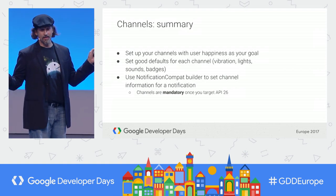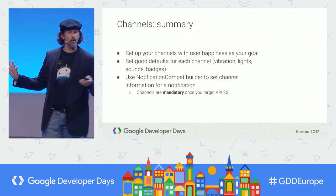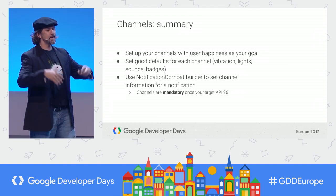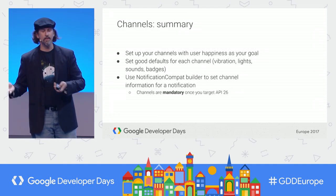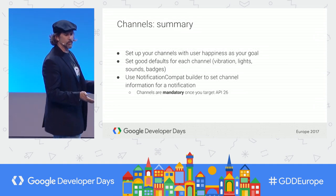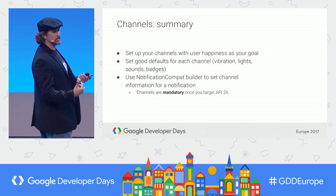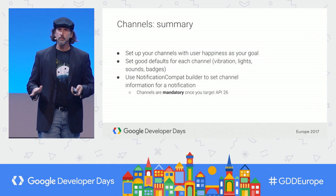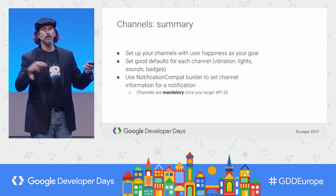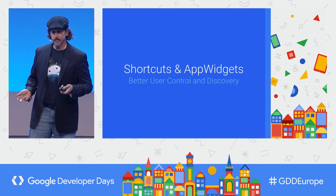Don't overwhelm your users with channels. Make the distinctions between them make sense and give them reasonable defaults. You can use notification compact to set channel information. Remember that if you don't use channels and you're targeting Oreo, your notifications aren't going to show up.